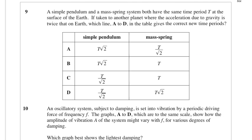A simple pendulum and a mass spring system both have the same time period at the surface of the Earth. If taken to another planet where the acceleration due to gravity is twice that on Earth, which gives the new time periods? If you think about the time period of a mass spring system, it doesn't contain g, so its time period should not change at all. What we've done is we've gone from root L over g to root L over 2g, so effectively you've divided it by root 2, so that would be option C.